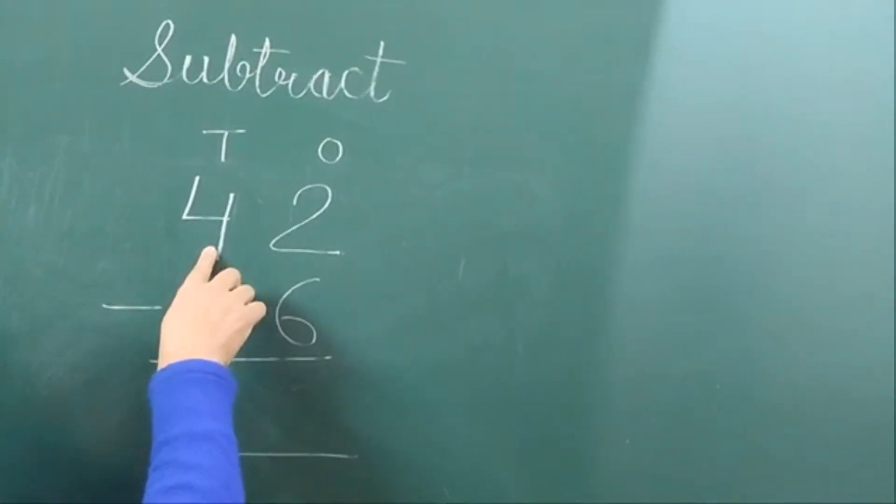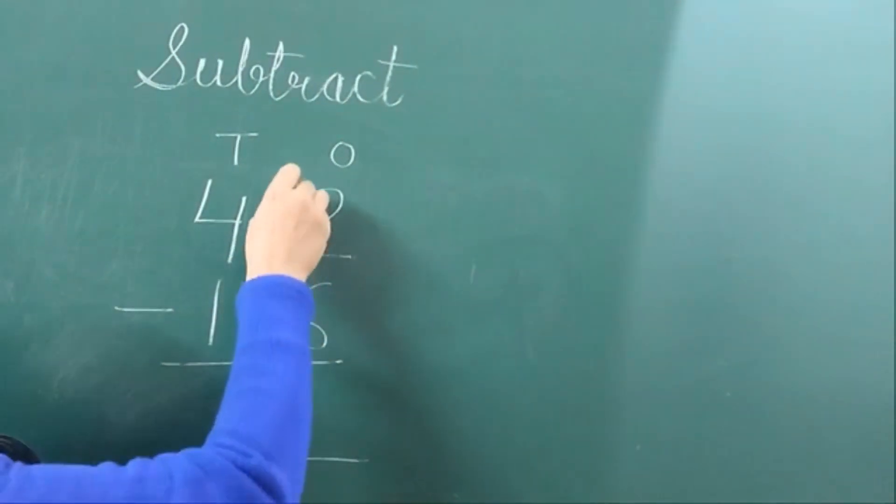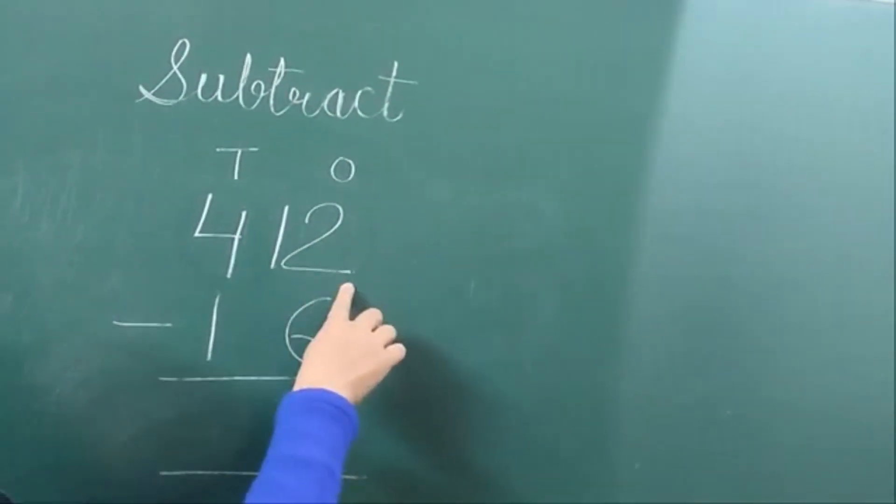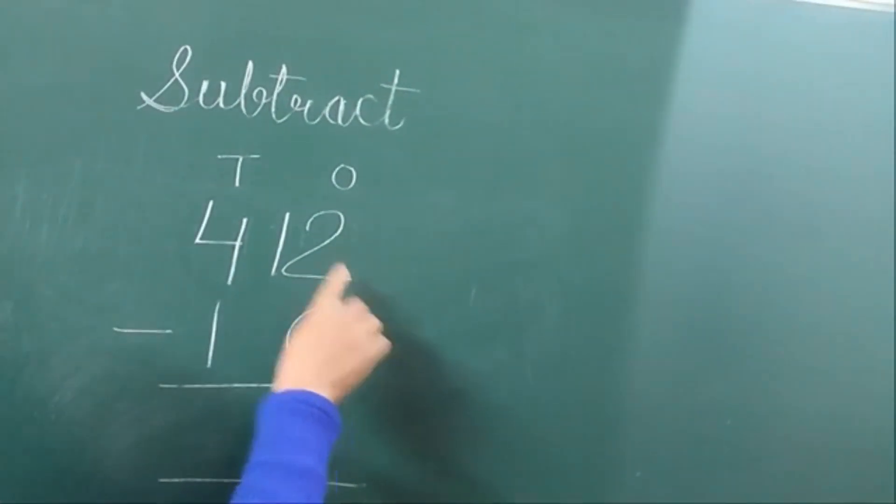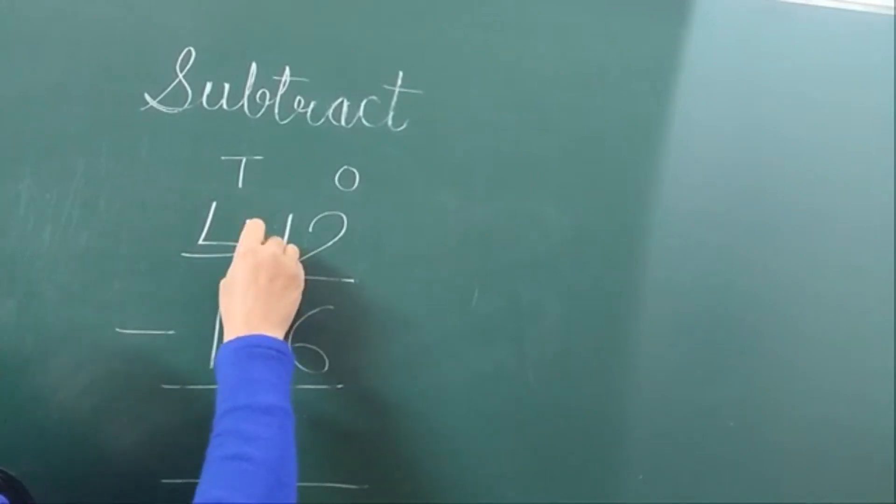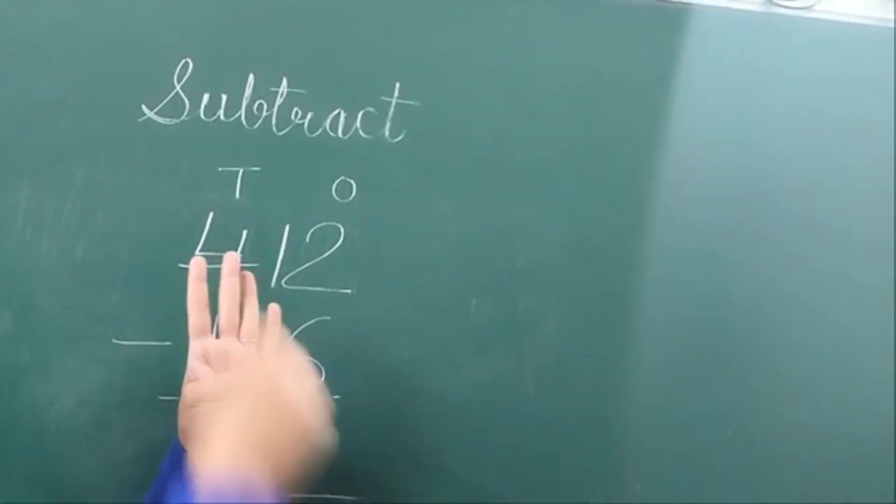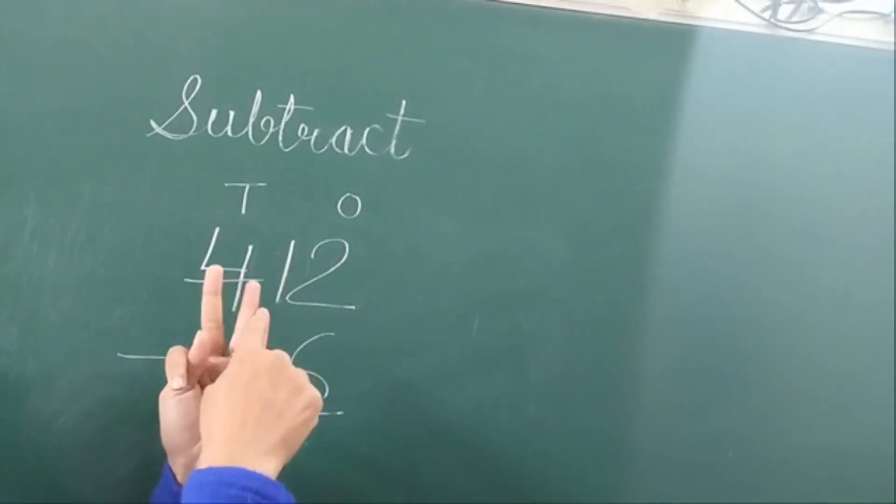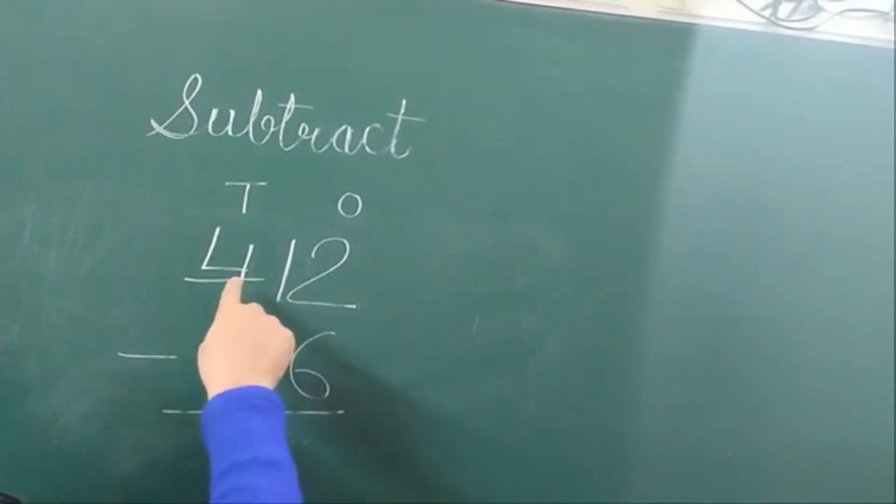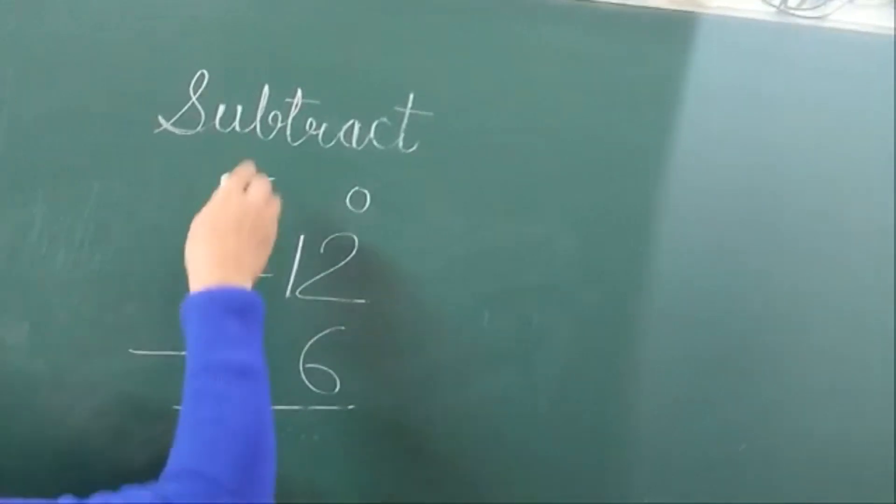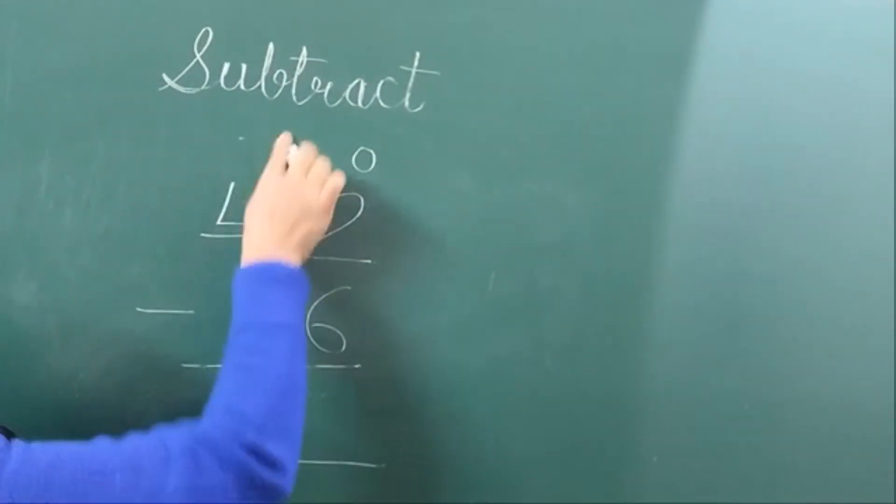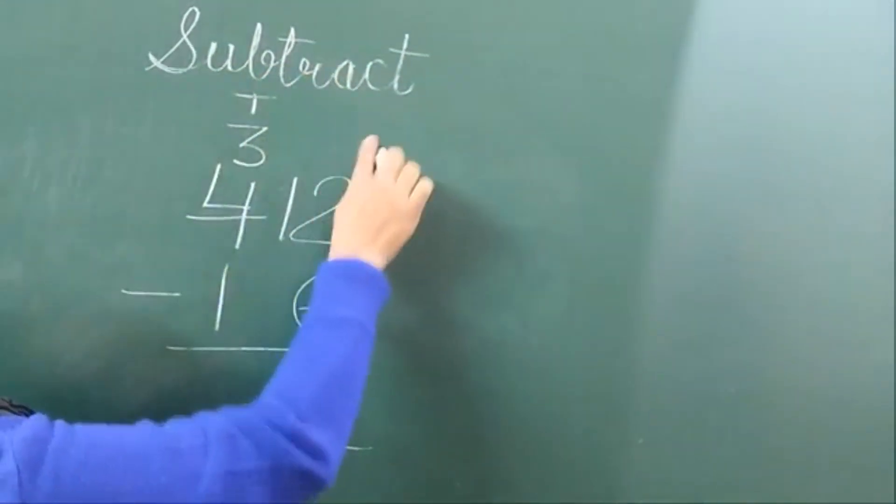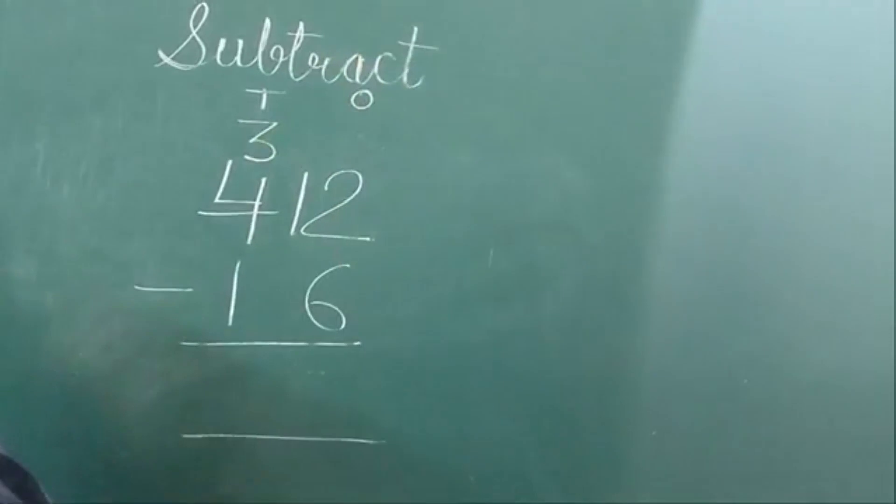Here we have 4 tens. From 4 tens we take 1 ten and give it to the 2. Now what is the number? 12. And 4 has given 1, so how many tens are left? 3. So at the place of 4, we will write 3. Is it clear?